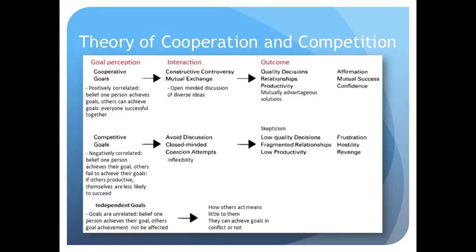Competition occurs when people believe their goals are negatively correlated, so that as one person achieves their goals, others fail to achieve their goals. They conclude that when others are productive, they are less likely to succeed themselves. This leads to avoiding or close-minded discussion and inflexibility, and results in deadlock or coercion into a solution. This negative experience induces scepticism among group members that they can handle conflict and also results in frustration, aggression, hostility and revenge.